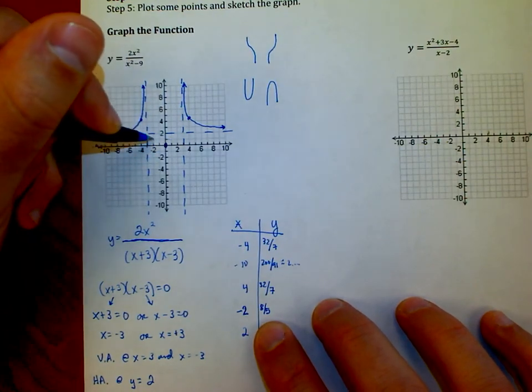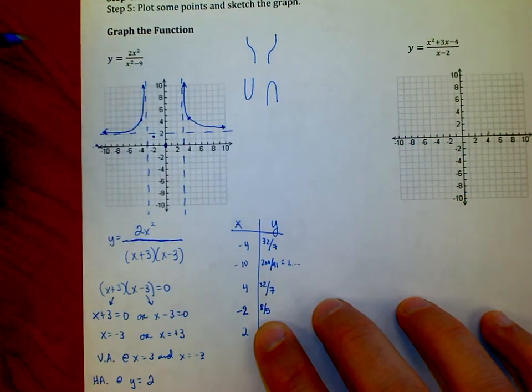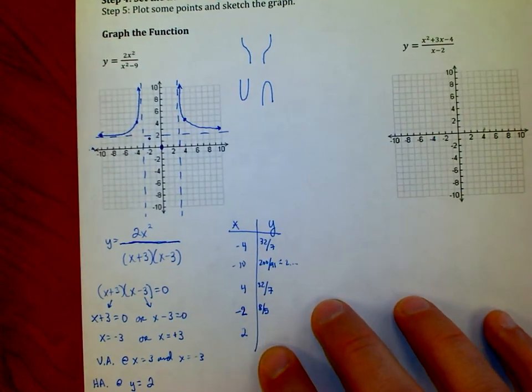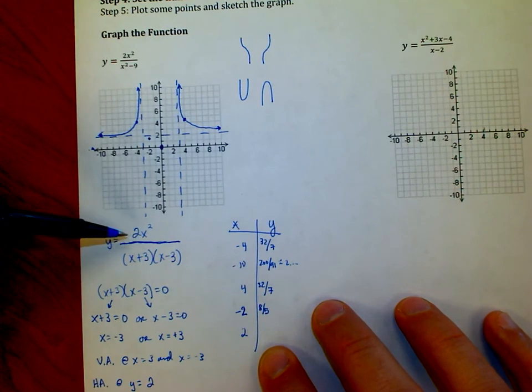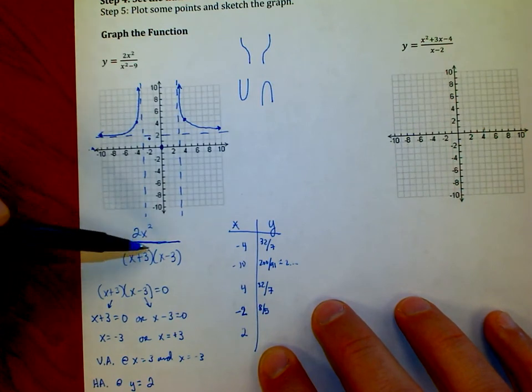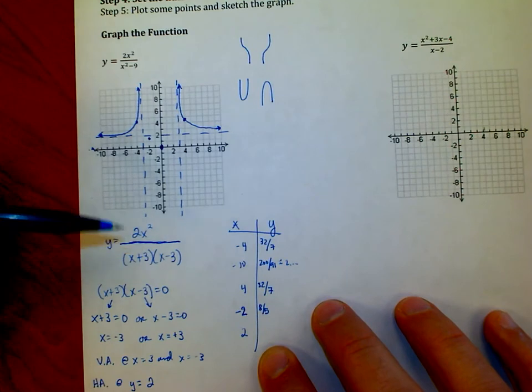So you have 8 divided by 5 is 1.6. So if I put in a negative 2, I should be at 1.6. So I'm right about here. If I put in a positive 2, what do I get? Positive 2 squared is 4 times 2 is 8.